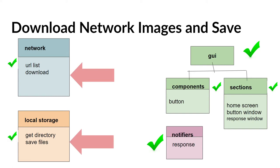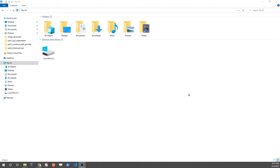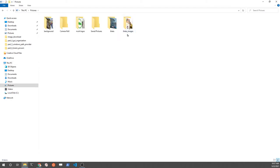Thanks for joining us for this beginner Flutter tutorial series. We're going to download images from a URL list from the network and save them to the local Windows 10 Pictures folder. The Flutter desktop application will automatically create a subdirectory called theta_images within the Pictures folder.